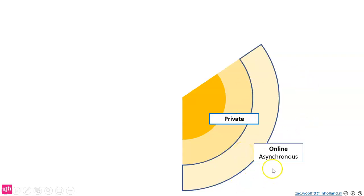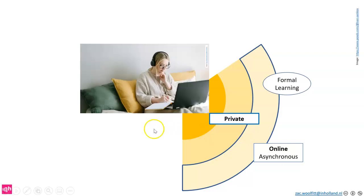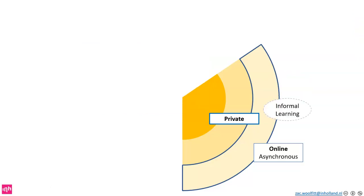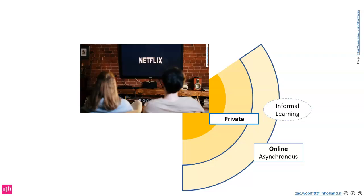You can also see online asynchronous. For formal learning, this would be somebody who's decided to follow a course and is now watching a pre-recorded lecture of the content. For informal learning, it would be somebody hanging out watching TV at the weekend, watching their favourite series — that's informal learning because there's no fixed curriculum, but they're learning about history or the world, and it's happening at a time of their choice.